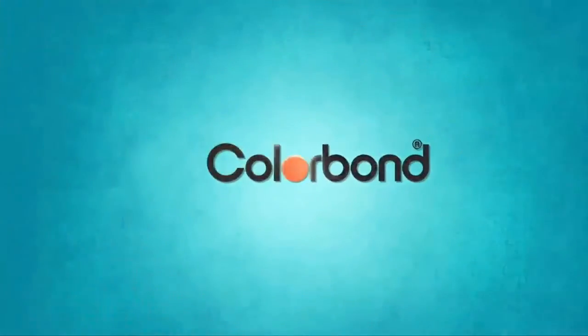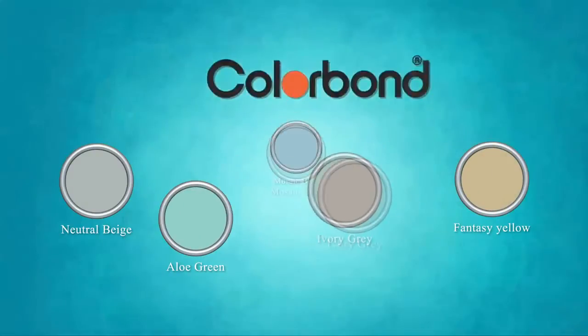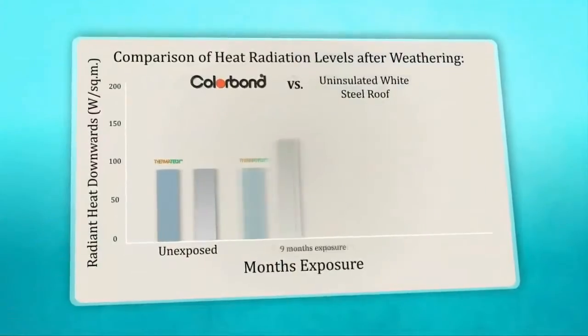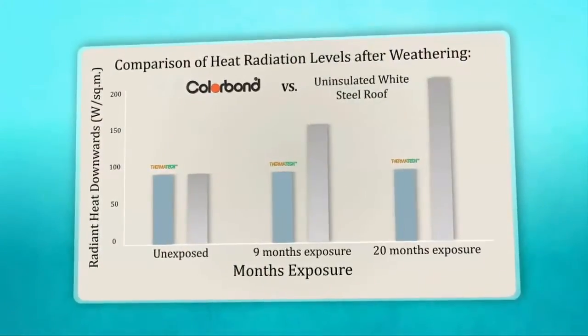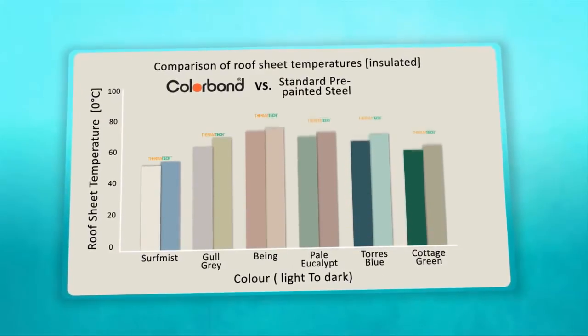Colorbond steel now comes with five new sustainable colors which have SRI value of more than 80. A lower surface temperature means less heat transmitted indoors, resulting in cooler buildings.